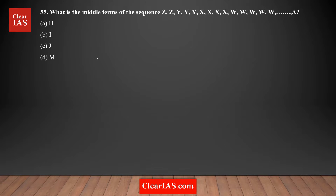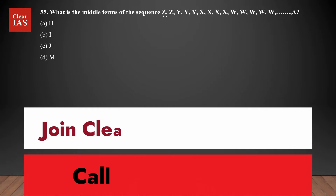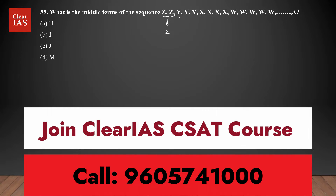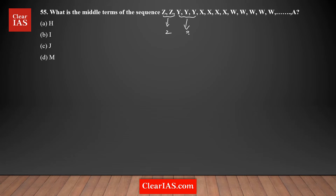What is the middle term of the sequence given? First, you need to figure out on what basis this sequence was formed — what is the pattern they have followed. Analyzing it, Z appears two times, Y appears three times, X appears four times. So they start with Z and go backward in reverse alphabetical order.